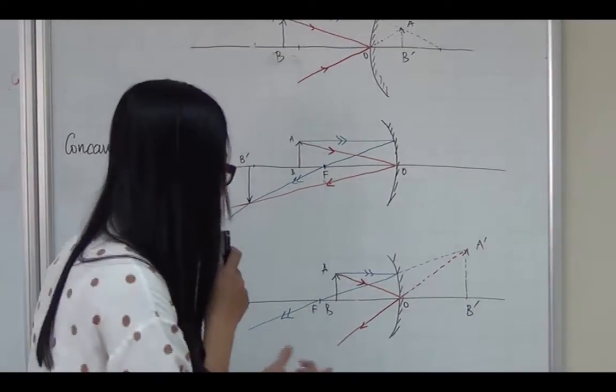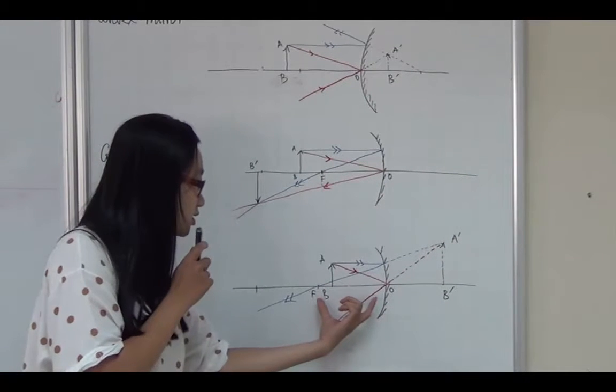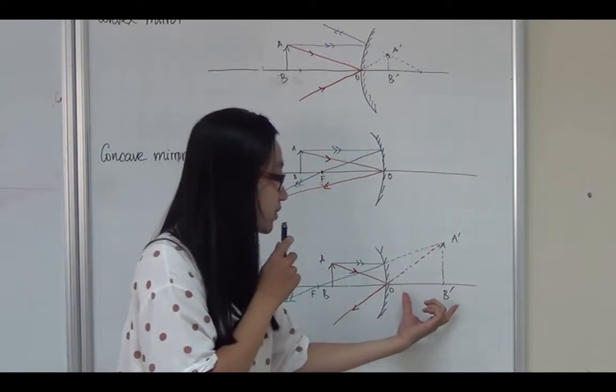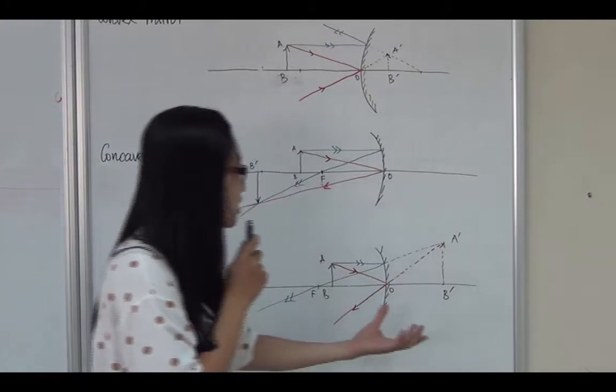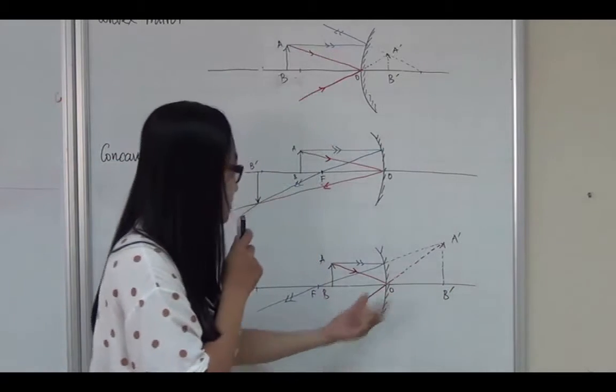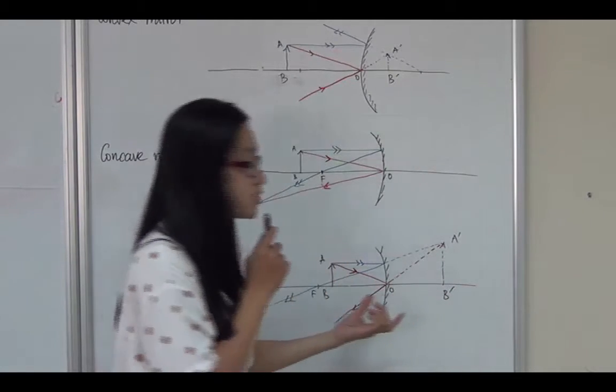But when I put the object inside the focal length, we get a virtual image, still larger than the object but now it has the same direction.